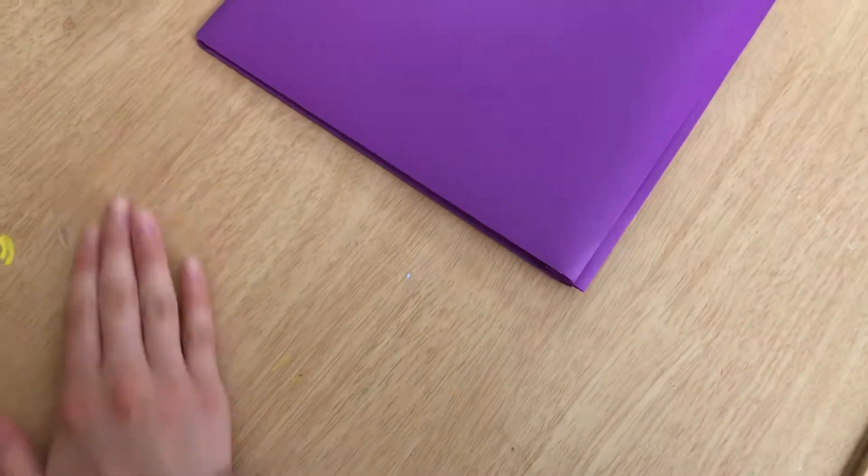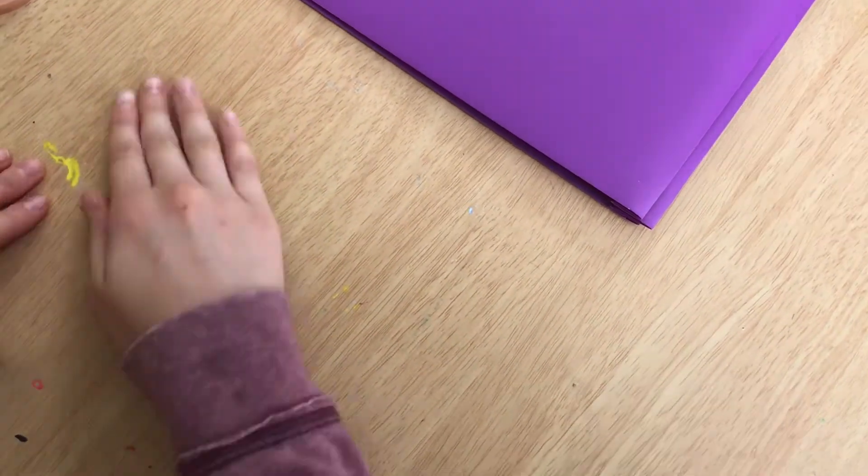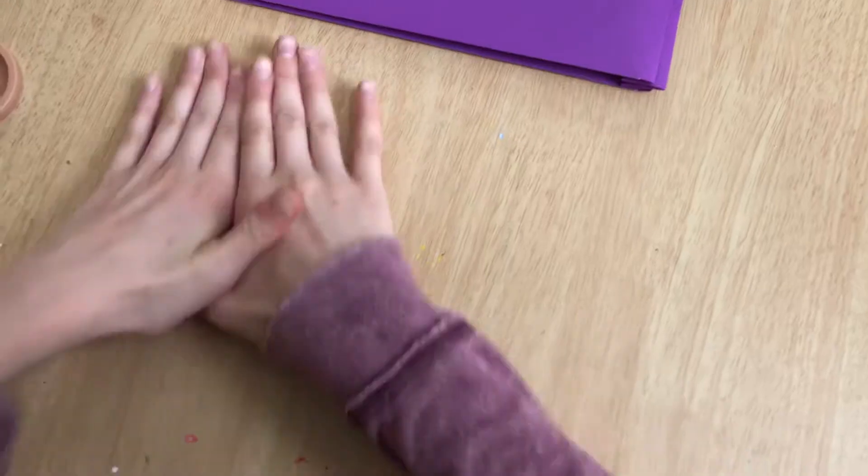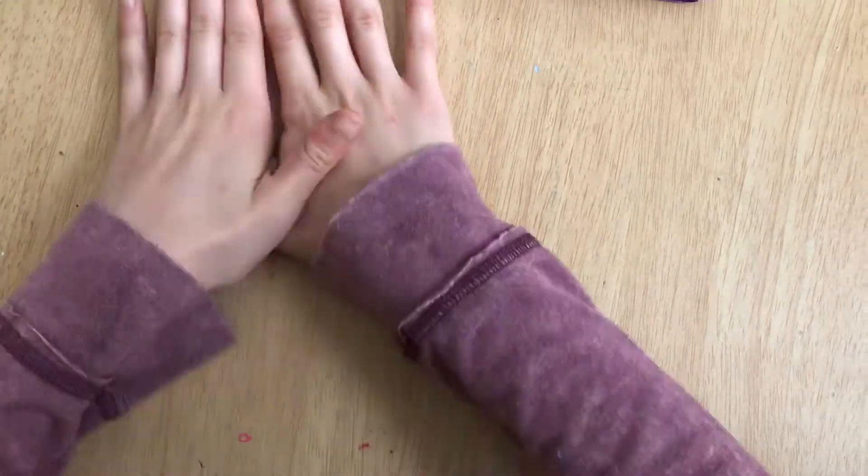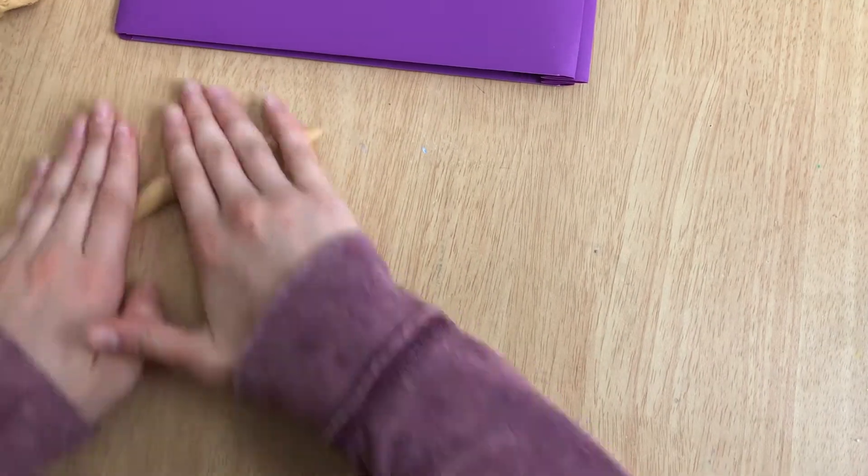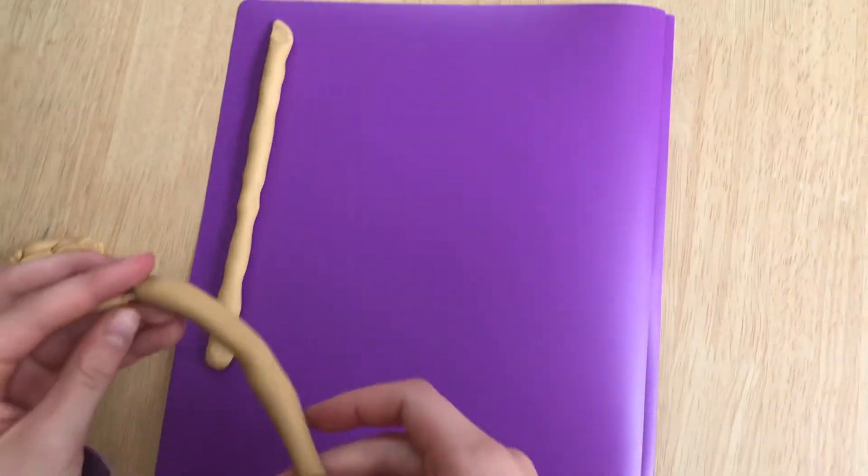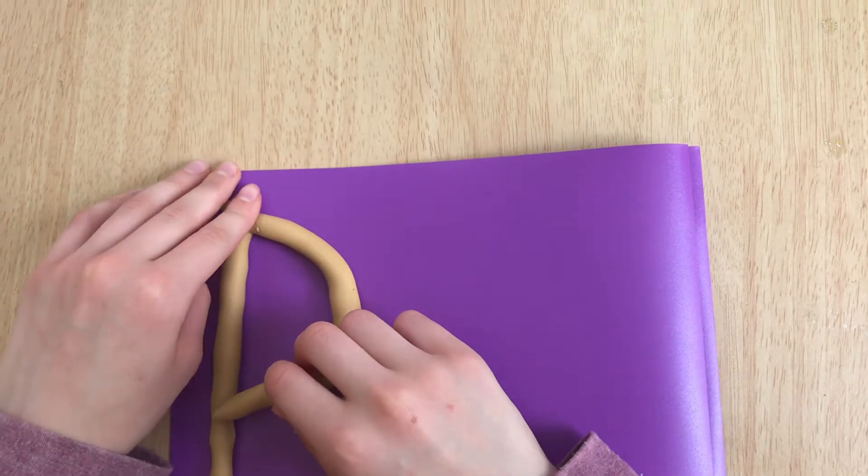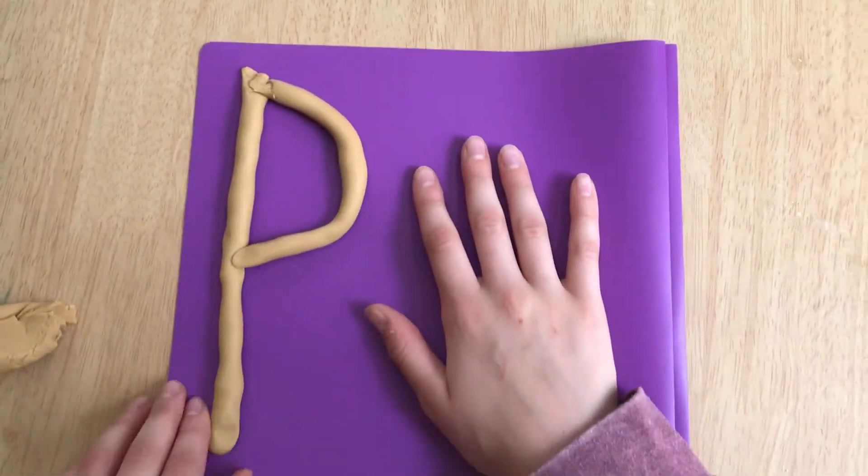Since we're making P, we need to roll out a little curve. Let's use two hands to roll out our curve. Now we can add it. We want to make a little curve and add it to our big line down.